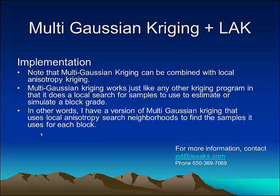Note also that Multi-Gaussian Kriging can be combined with local anisotropy Kriging. Multi-Gaussian Kriging works just like any other Kriging program in that it does a local search for samples to use to estimate or simulate a block grade. I have a version of Multi-Gaussian Kriging that uses local anisotropy search neighborhoods to find the samples used for each block. If you would like more information, please contact me at ed.isaacs.com or call me at 650-369-7069. I look forward to working with you. Thank you.